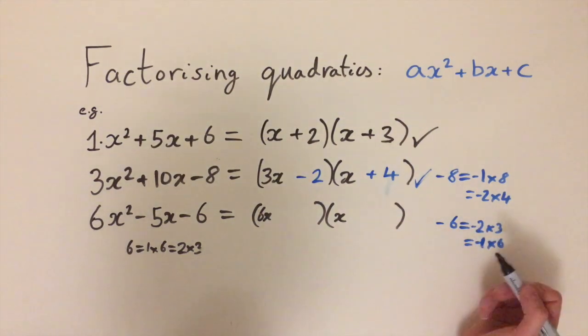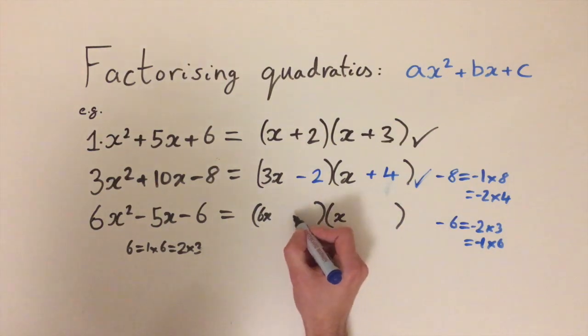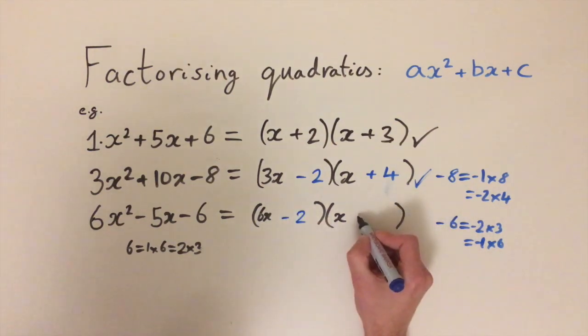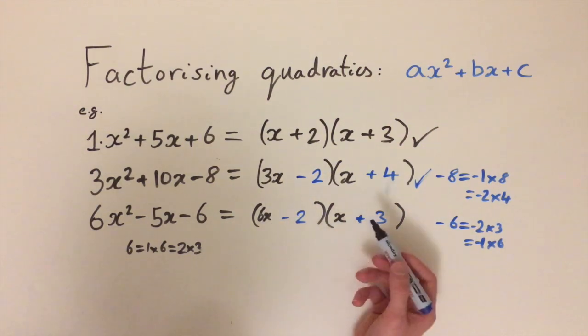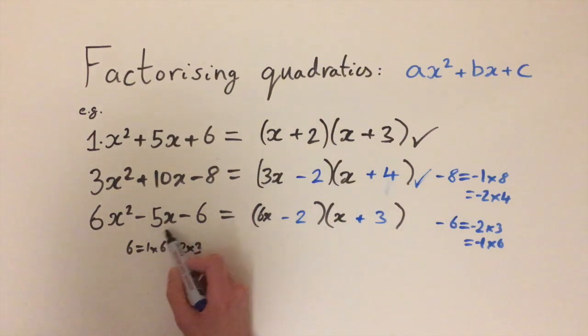So let's try these combinations out, see if any of these work. Let's start with minus 2 and plus 3. If we do minus 2x plus 3x, 18x minus 2, that's 16x so that's not going to give us the minus 5x we want.